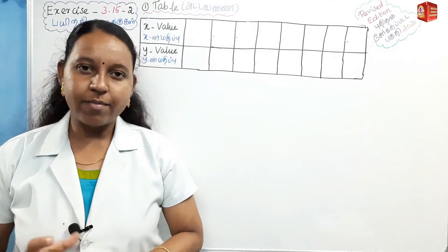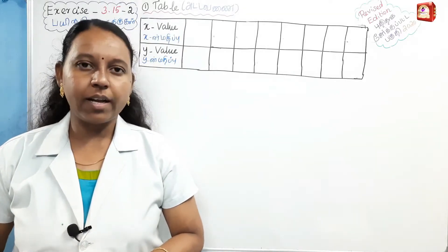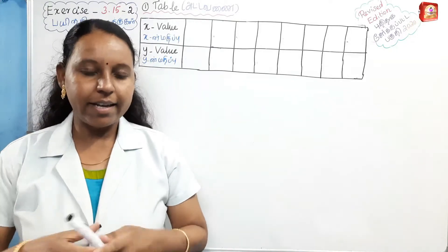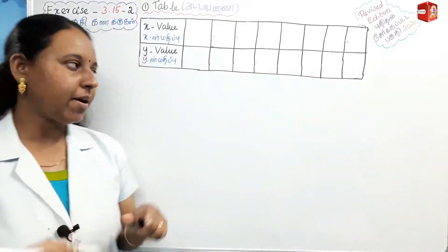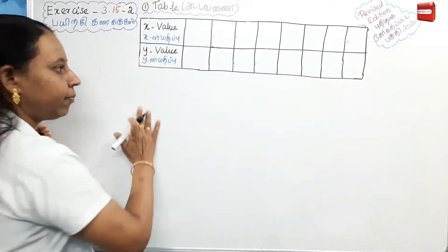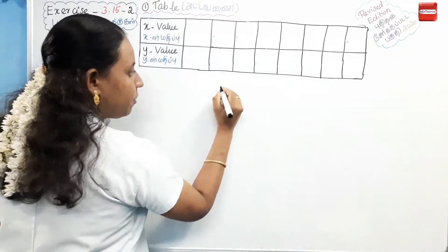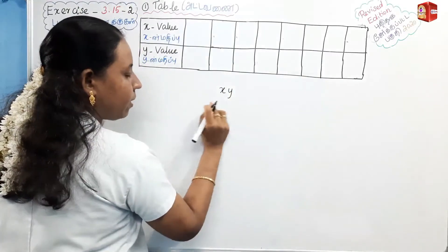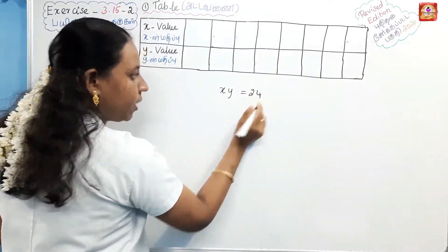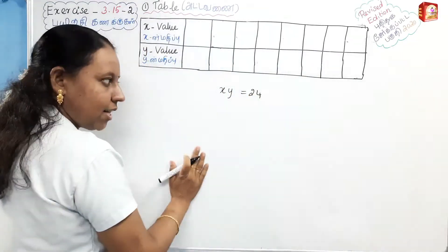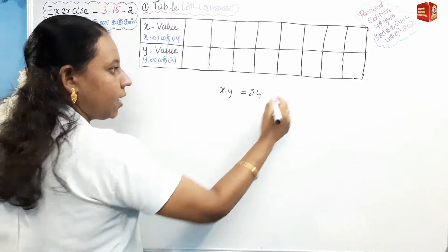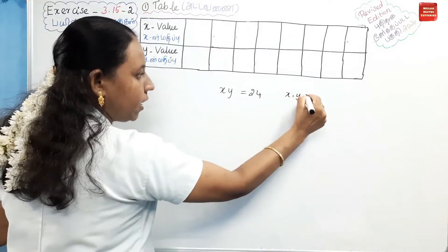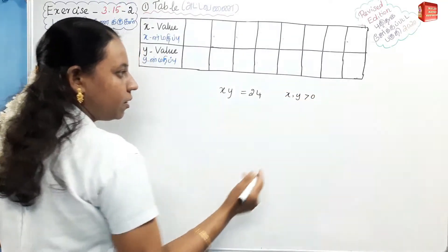In this question we have two conditions. The first condition is xy equals 24, meaning x multiplied by y gives 24. The second condition is x, y greater than 0.